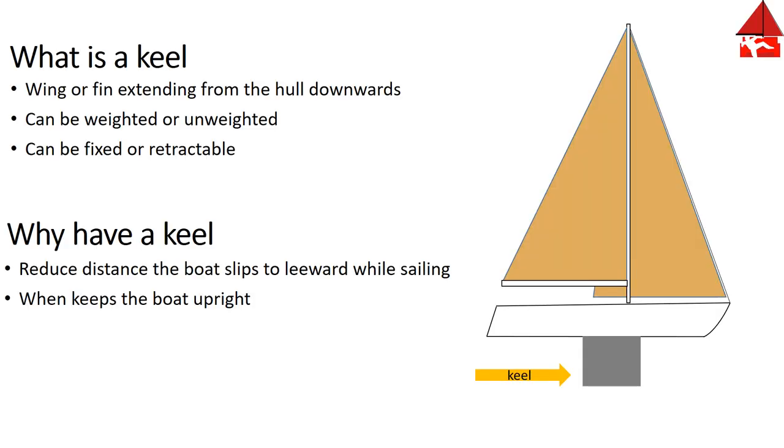The sailboat keel is a wing or fin that extends down from the bottom of the boat. The keel can be weighted or unweighted and it can either be fixed or it can move back up into the boat to allow the boat to go into shallower locations. Keels come in a lot of different configurations. All I'm trying to illustrate is where the keel is located.